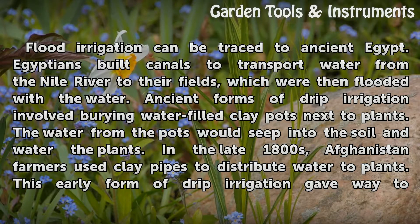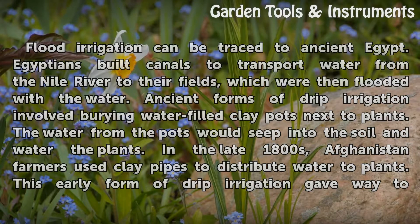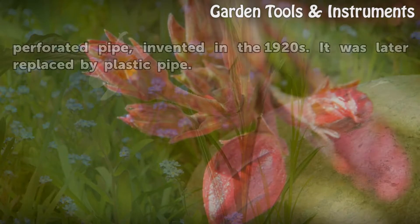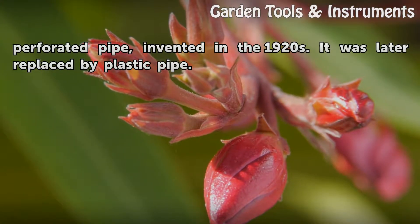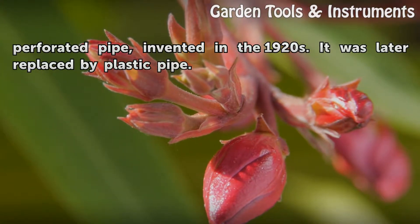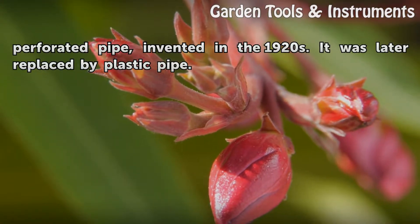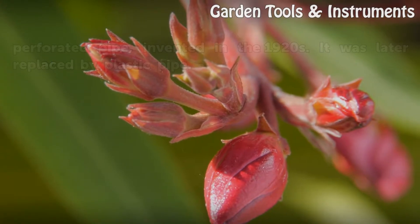In the late 1800s, Afghanistan farmers used clay pipes to distribute water to plants. This early form of drip irrigation gave way to perforated pipe, invented in the 1920s. It was later replaced by plastic pipe.